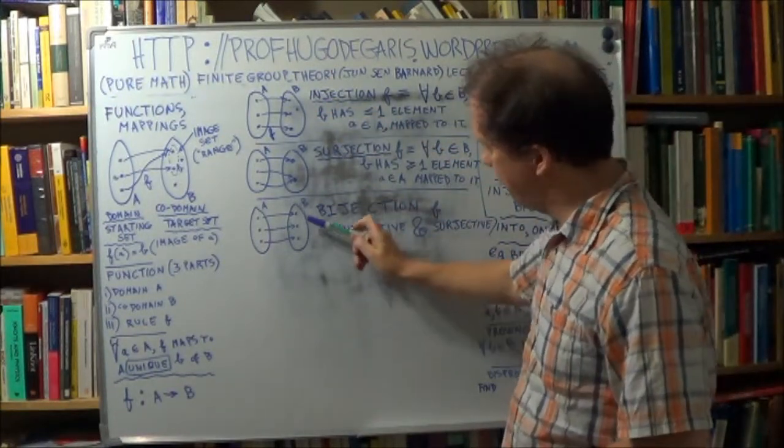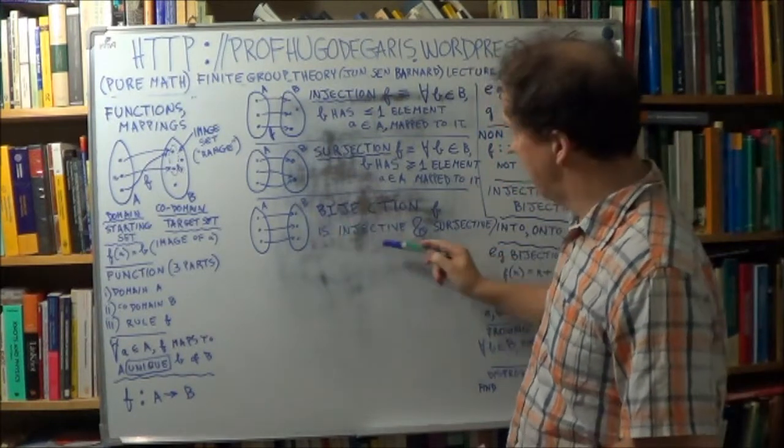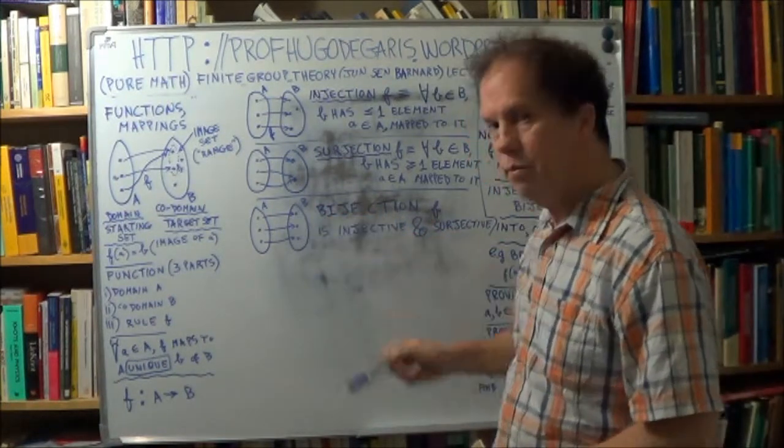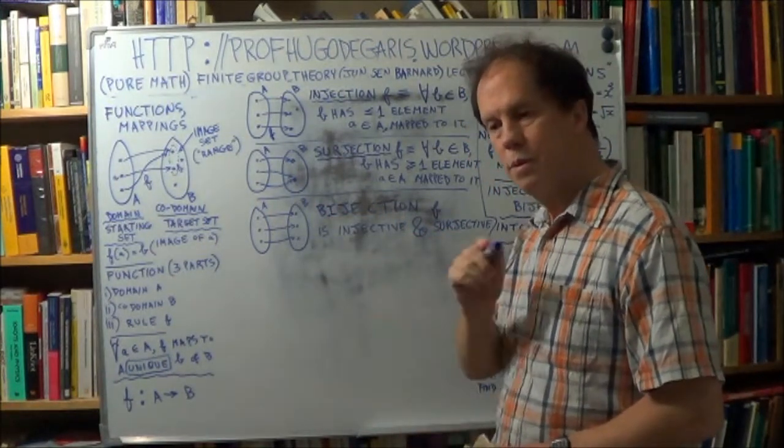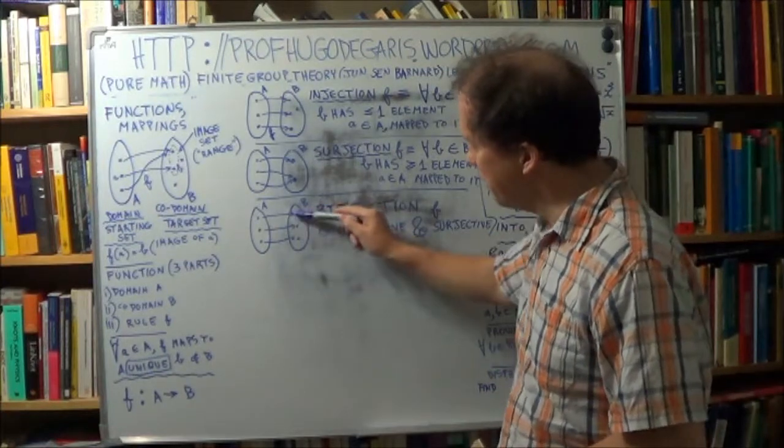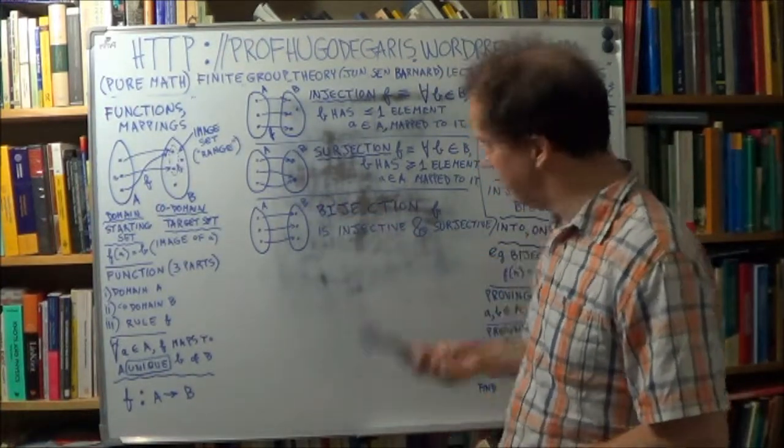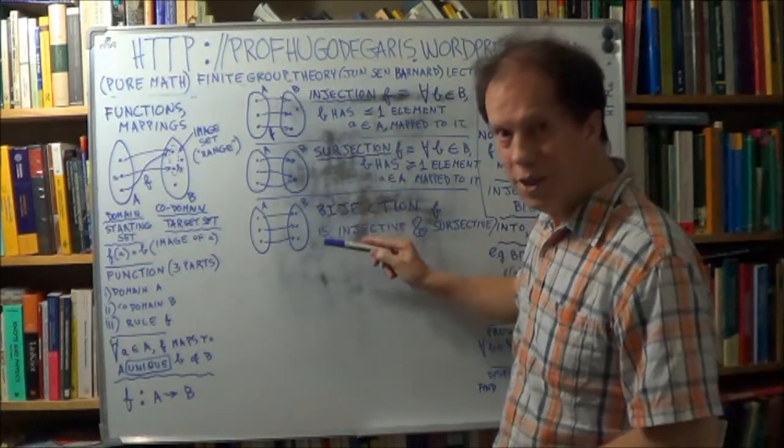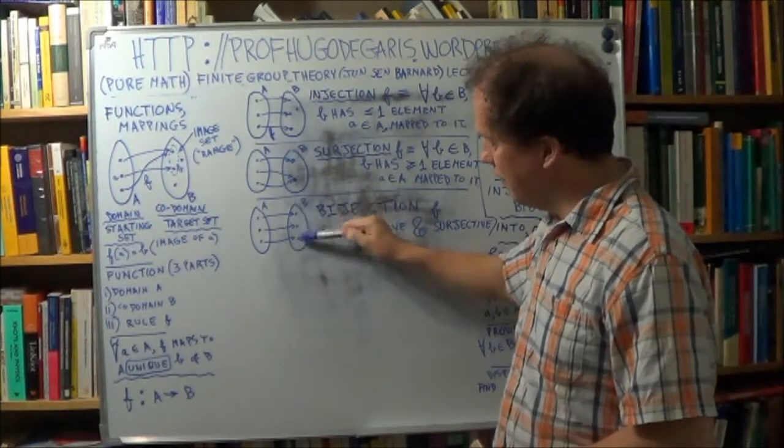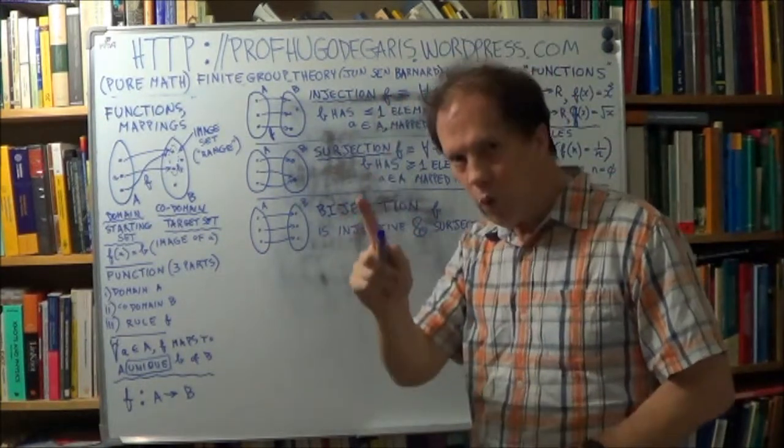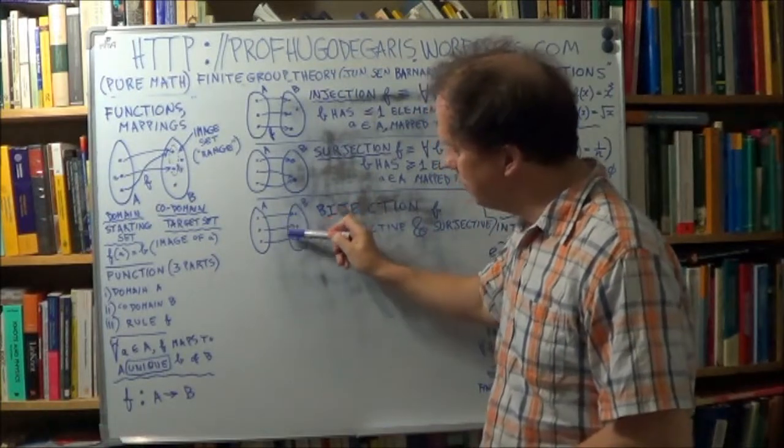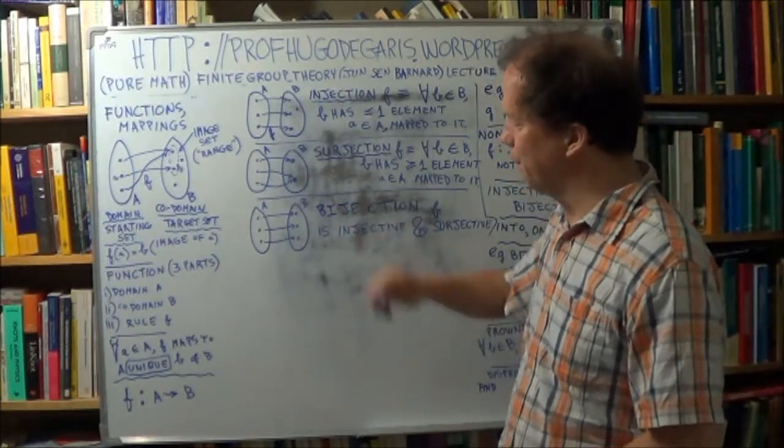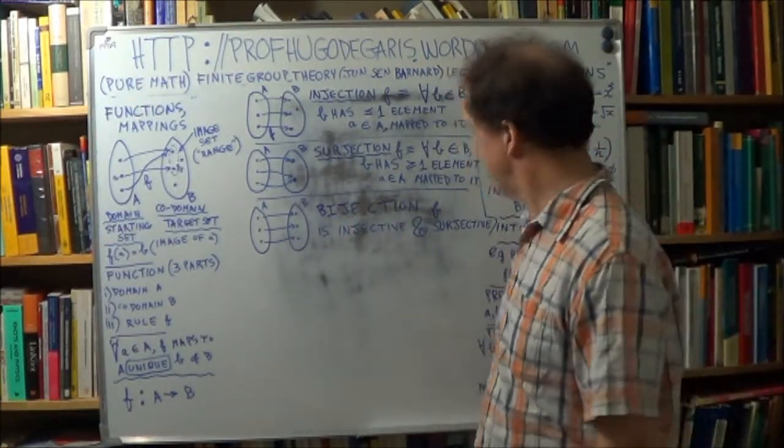So if it's surjective, every element's mapped to, and because it's also injective, it means the number of arrows here cannot be more than one. So that means each one just has one arrow. If you put these two together, it means that each element here in your codomain, your target set, has only one and only one arrow. It's mapped to just once for each member of your B, of your codomain, your target set.